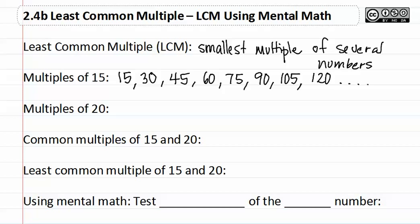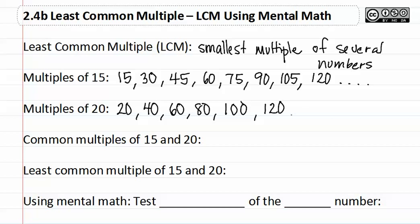We could keep multiplying by numbers and get more and more multiples. If we did the multiples of twenty: twenty times one is twenty, times two is forty, times three is sixty, times four is eighty, times five is one hundred, times six is one hundred twenty, times seven is one hundred forty, and these would also continue.